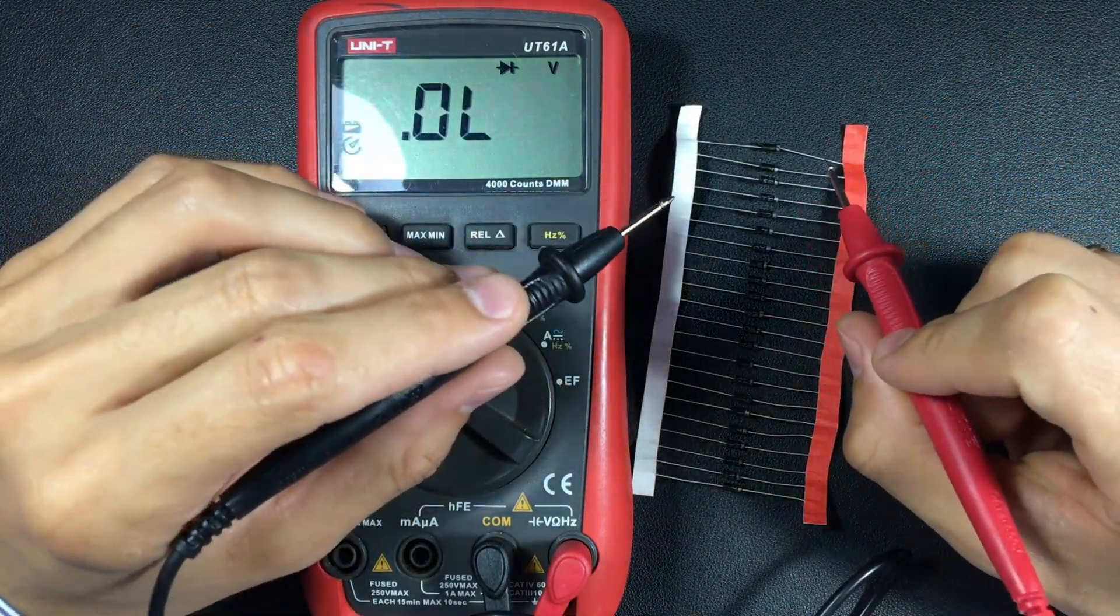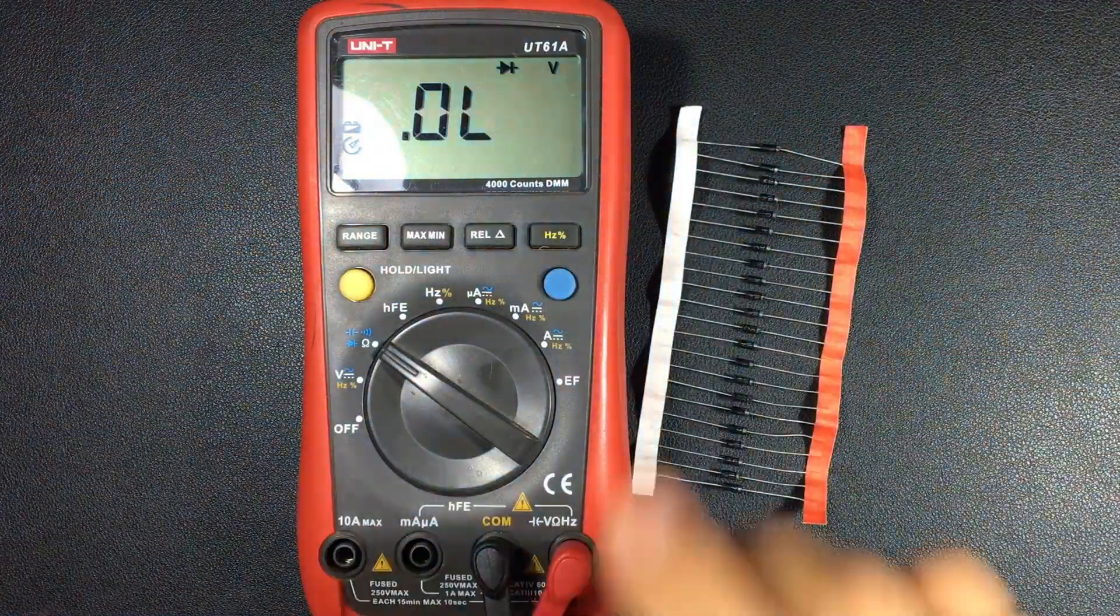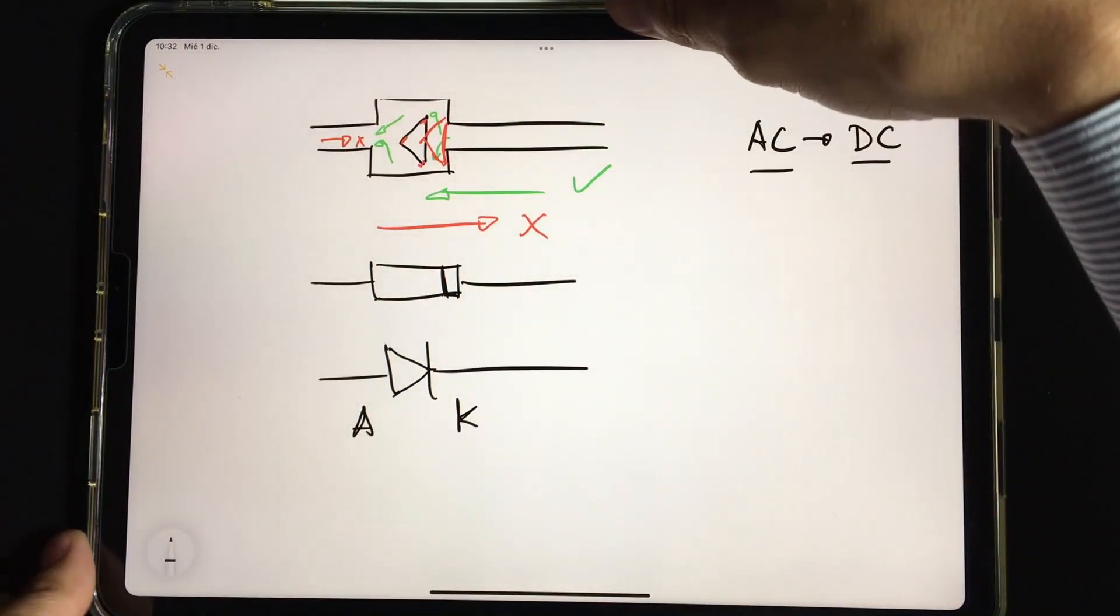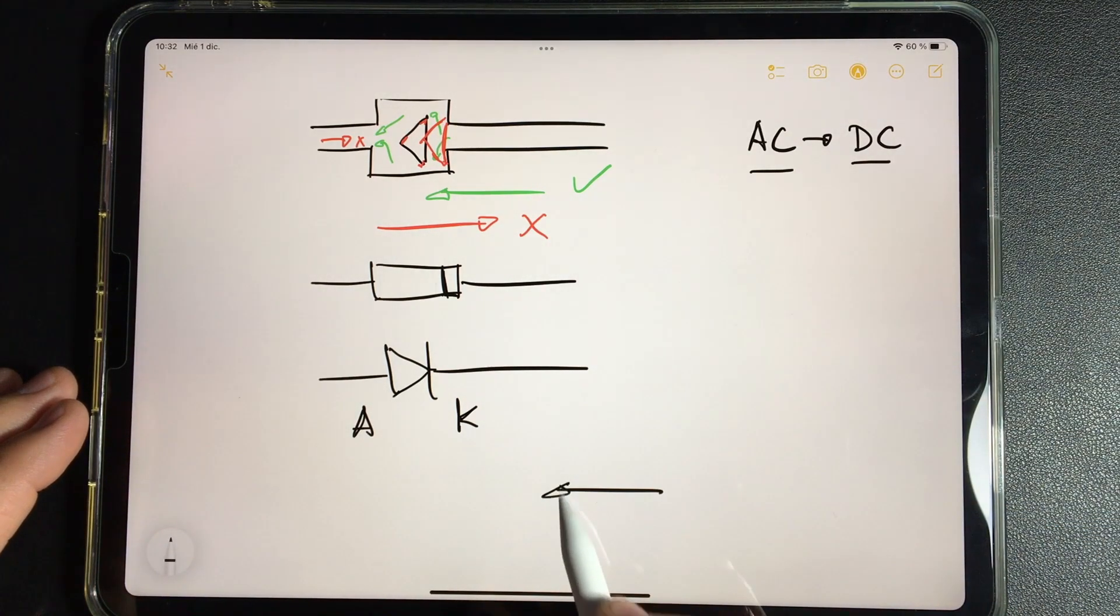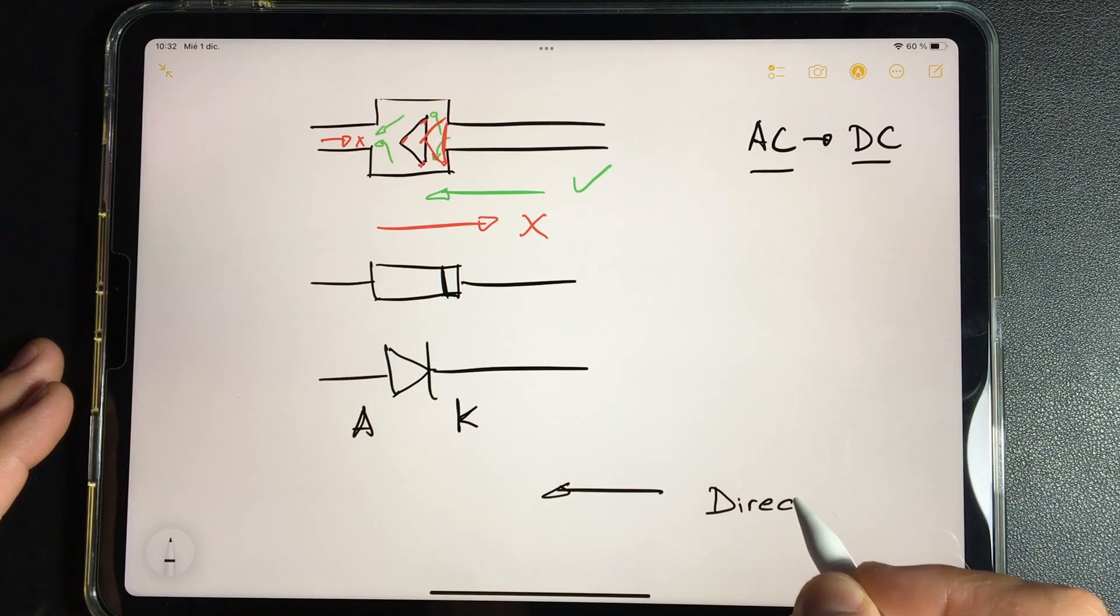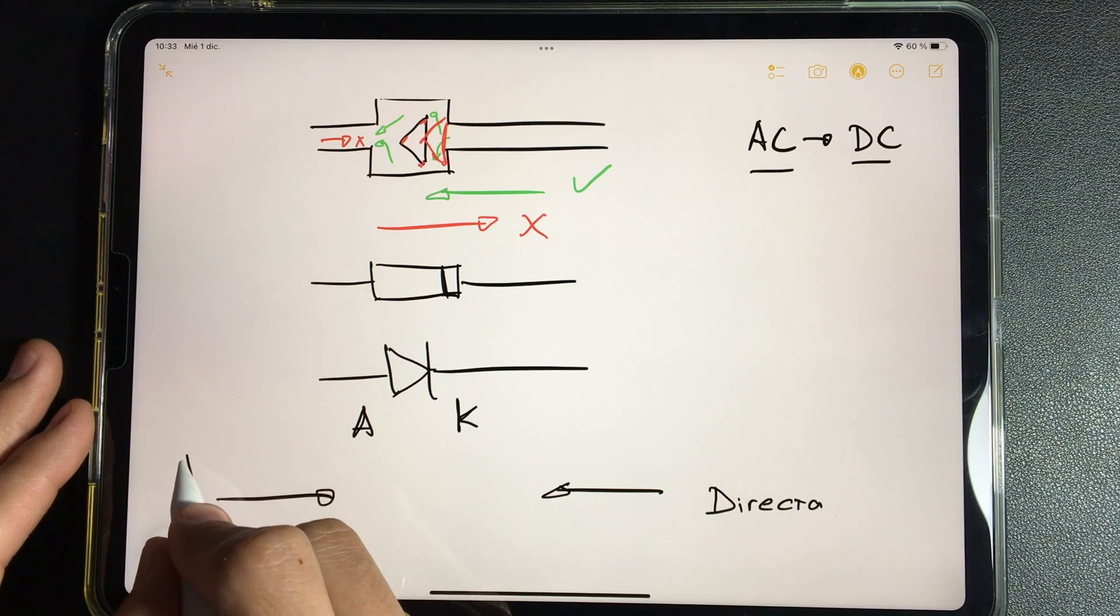What we just did was to polarize it, or injecting electrons, in two different ways. It is important that these terms are memorized, names that we are going to write here. What we just did was polarize it. When we injected electrons from the cathode, from the side where they pass, we polarized it in direct. And when we injected electrons from the other side, what we did was polarize it in reverse.